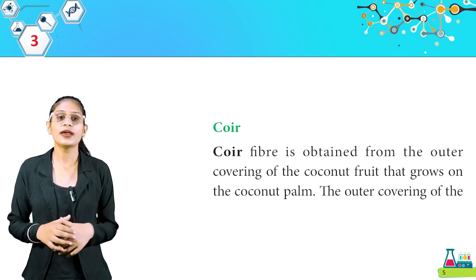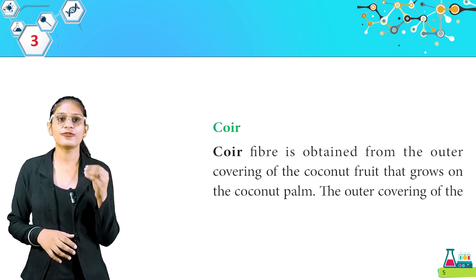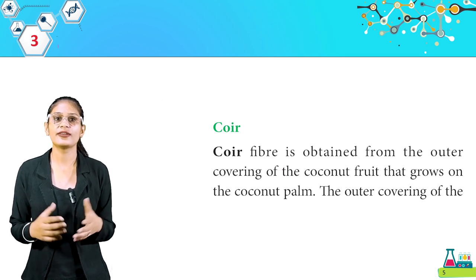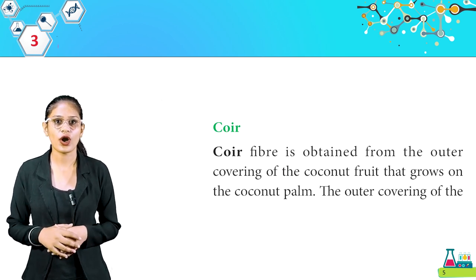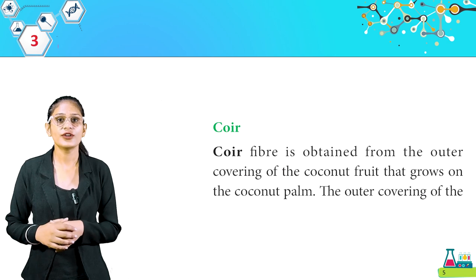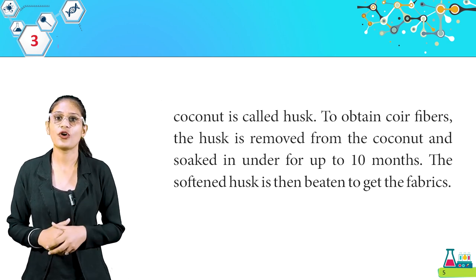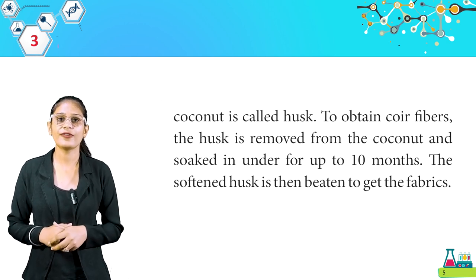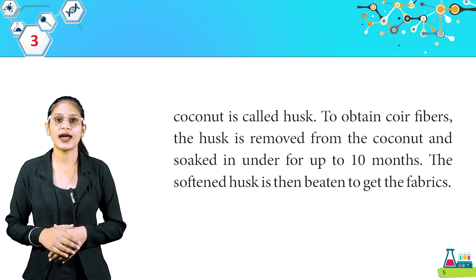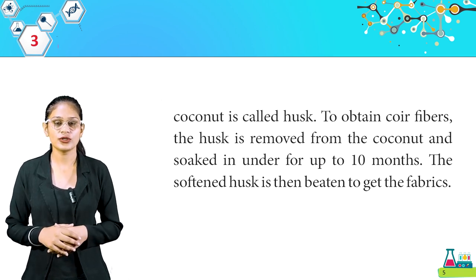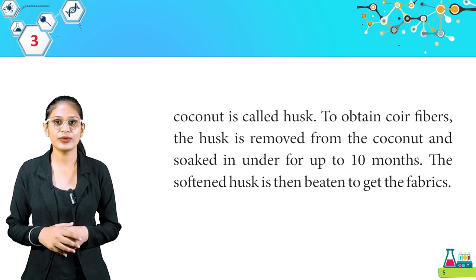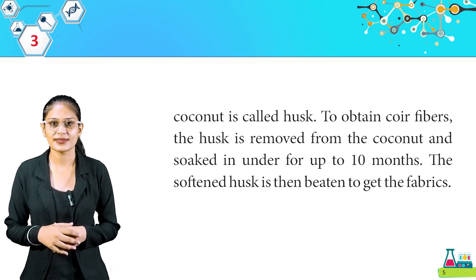Here, coir. Coir fiber is obtained from the outer covering of the coconut fruit that grows on the coconut palm. The outer covering of the coconut is called husk. To obtain coir fibers, the husk is removed from the coconut and soaked in water for up to 10 months. The softened husk is then beaten to get the fibers.